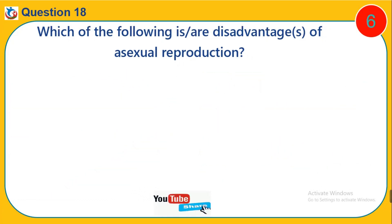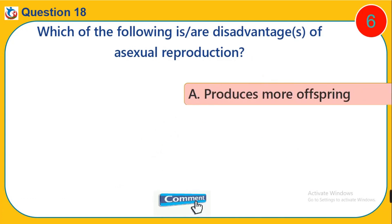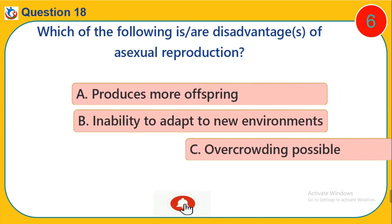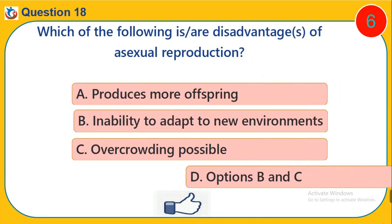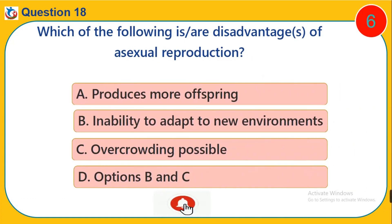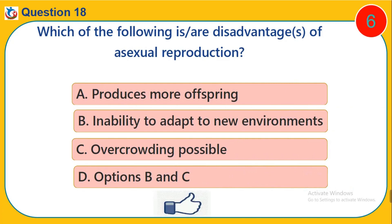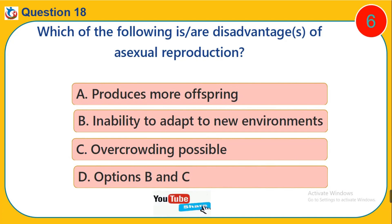Question 18. Which of the following is or are disadvantages of asexual reproduction? A. Produces more offspring. B. Inability to adapt to new environment. C. Overcrowding possible. D. Options B and C.